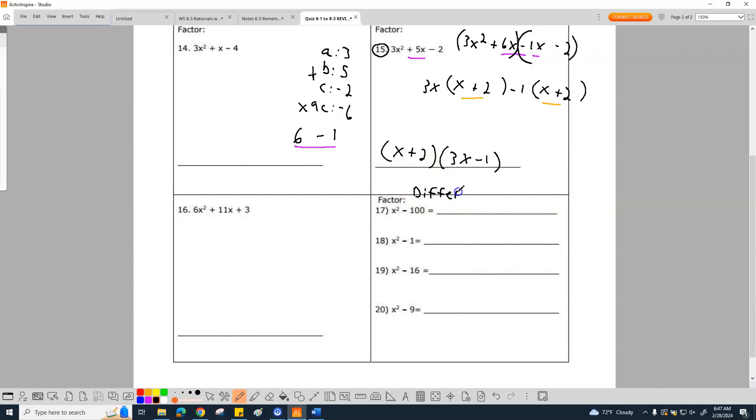I don't even want to write this. Difference of squares, meaning if there's a minus sign, which I see a minus sign, and they're both perfect squares, which that's a perfect square, that's a perfect square, then you're going to end up with something that looks like this.